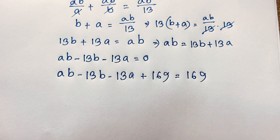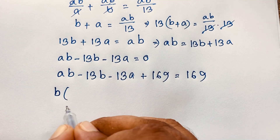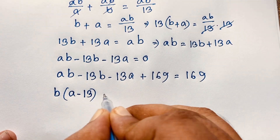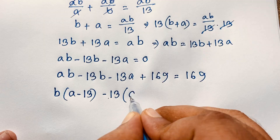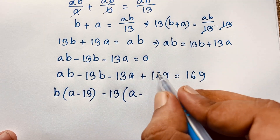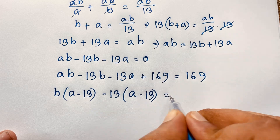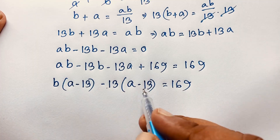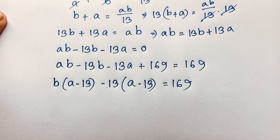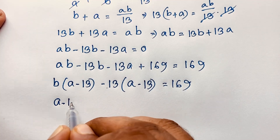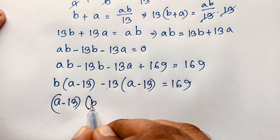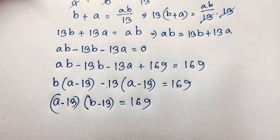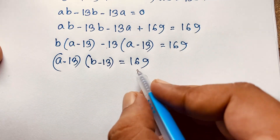Now b is common in the first two terms, and negative 13 is common in the last two terms, so we can factor this expression. We get (a minus 13) times (b minus 13) equals 169.